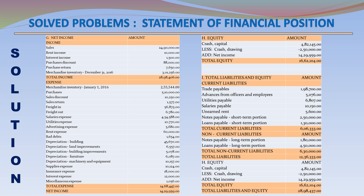Total Liabilities and Equity summary: Current Liabilities — Trade Payable 198,700; Advances from Officers and Employees 5,076; Utilities Payable 6,807; Salaries Payable 10,150; Unearned Rent 5,600; Notes Payable Short-Term 250,000; Loans Payable Short-Term 130,000. Total Current Liabilities – 606,333. Non-Current Liabilities — Notes Payable Long-Term 180,000; Loans Payable Long-Term 450,000. Total Non-Current Liabilities – 630,000. Total Liabilities – 1,236,333. Equity: Crash Capital 482,145; Less Crash Drawings 250,000; Add Net Income 1,429,959. Total Equity – 1,662,104. Total Liabilities and Equity – 2,898,437.